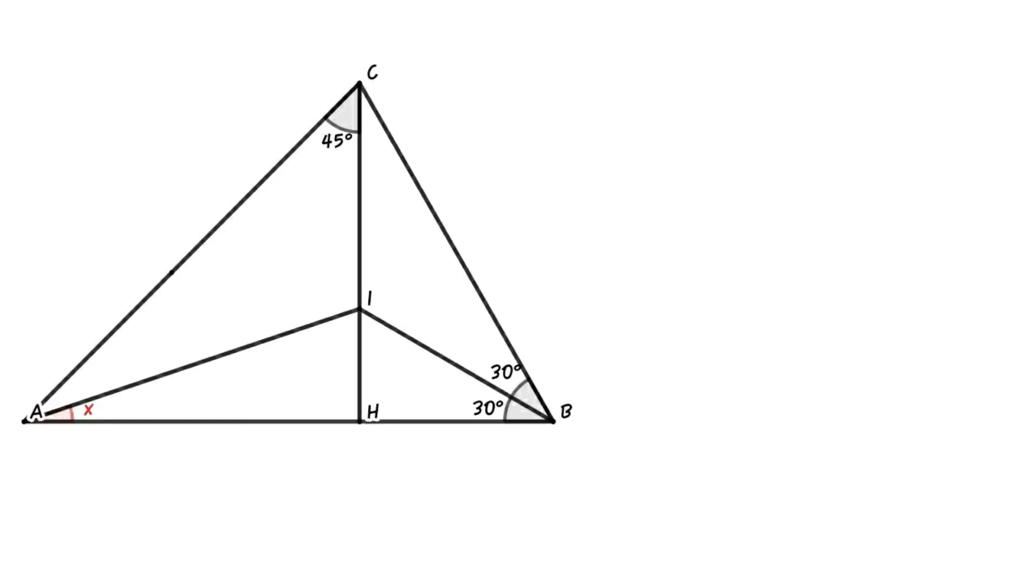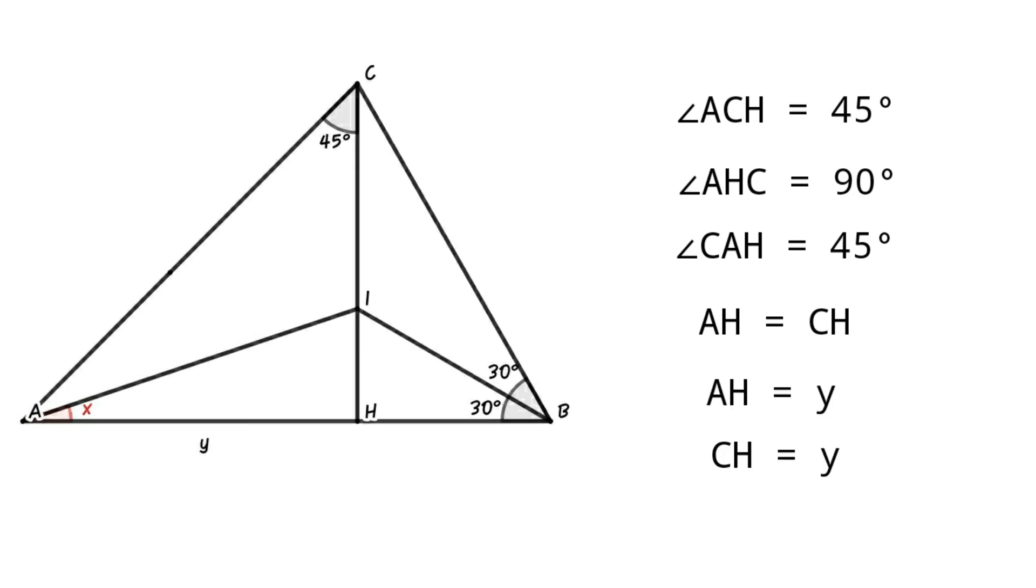Consider triangle ACH. We know that angle ACH equals 45 degrees, and angle AHC equals 90 degrees. So angle CAH equals 45 degrees. That is, AH equals CH. If AH equals y, then CH will be y.